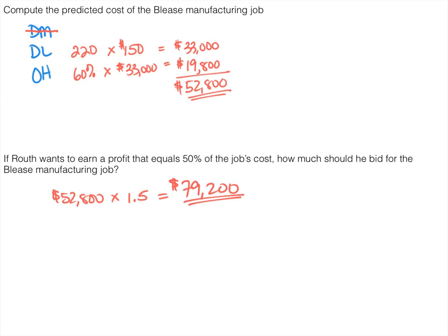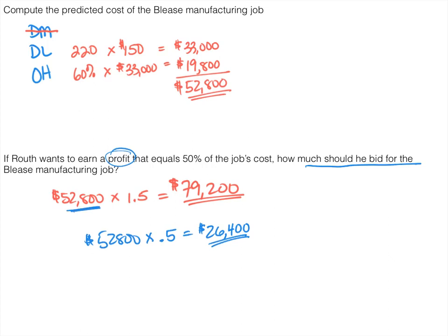There's an additional longer-handed way to do this. If we take $52,800 and multiply it times 50%, that gives us $26,400 — that's the profit we want to make, but that's not what the question asks for. The question wants to know how much we should bid. If we only bid $26,400, we're not even going to cover our cost of $52,800. So we have to add back the cost of $52,800, which gives us the $79,200 we found before.